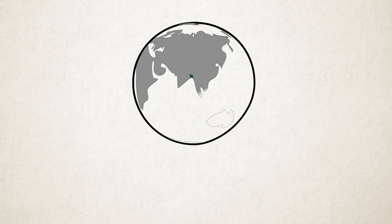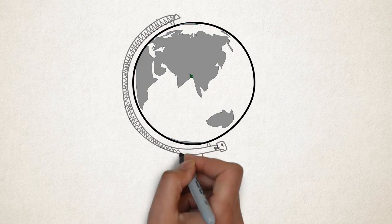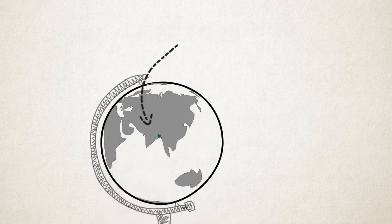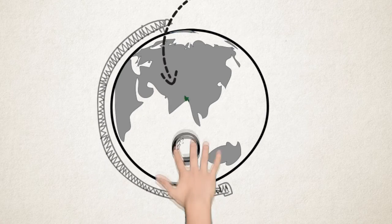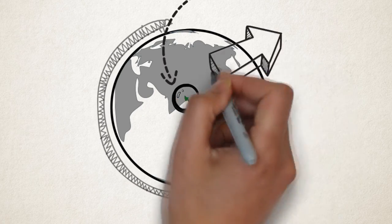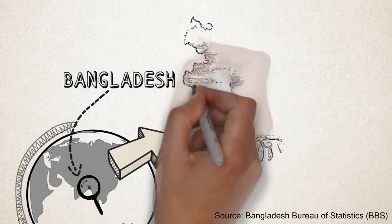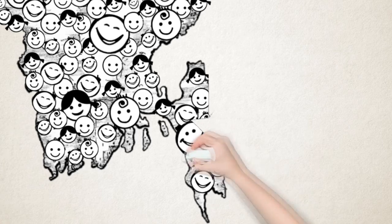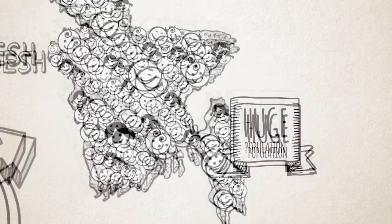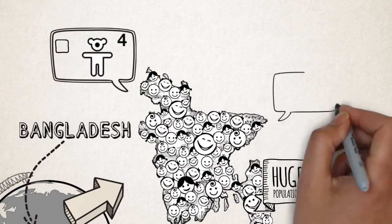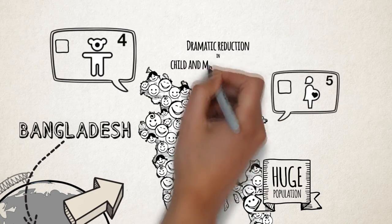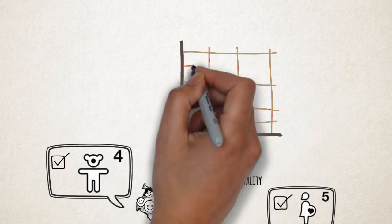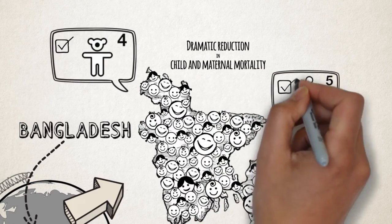This is our beloved earth and this is Bangladesh. It's a very small country with a population of 156 million. A country, despite its huge population, has managed to make some remarkable improvements in reducing maternal and child mortality, as per UN's MDG 4 and 5.